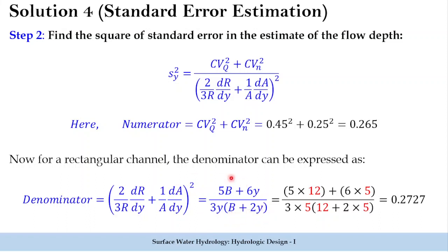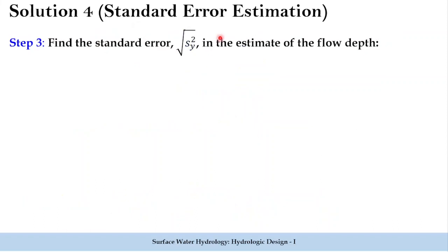This is the adapted denominator form for a rectangular channel. Substituting the values of width and depth into this equation gives 0.2727 as the denominator for the square of standard error. Now we know both the numerator and denominator and can estimate sy².